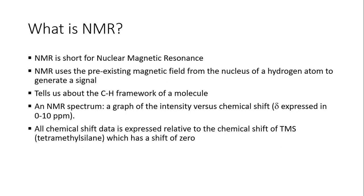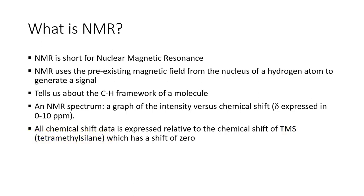NMR tells us the carbon-hydrogen framework of a given molecule. Every NMR spectrum has a scale from zero to ten, and that's where all of your signals are going to show up. We call the number where the signal shows up the chemical shift.